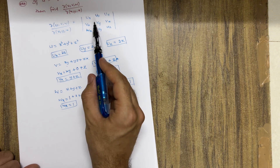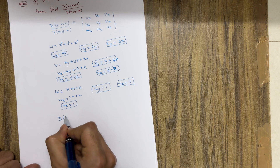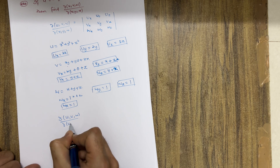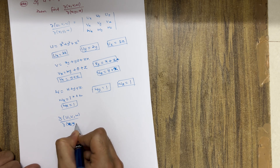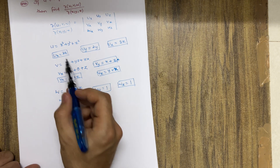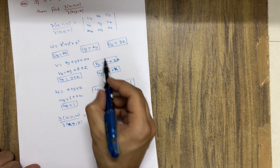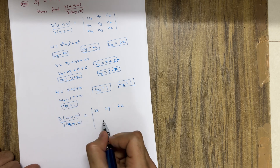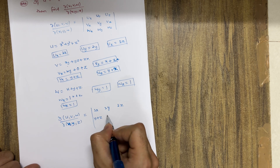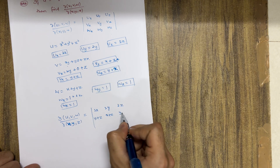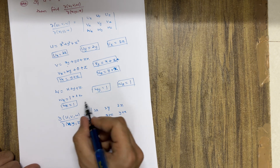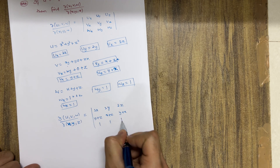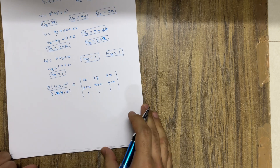Now we put these values into the Jacobian matrix. ∂(u,v,w)/∂(x,y,z) gives us: first row 2x, 2y, 2z; second row y+z, x+z, y+x; third row 1, 1, 1. This is the final matrix.